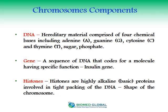Moving on to chromosome components, there are two major components: DNA, which is deoxyribonucleic acid, and proteins called histones, around which the DNA is wrapped. DNA is the hereditary material comprised of four chemical bases: adenine, guanine, cytosine, and thymine. Sugar and phosphate form a nucleotide, and DNA is a polymer of nucleotides.